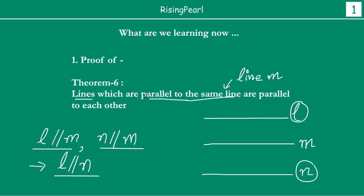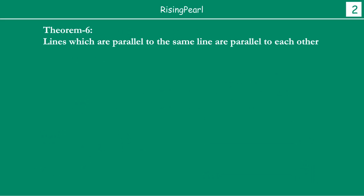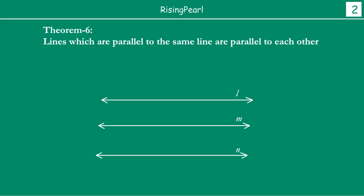So, lines which are parallel to the same line — that is our line M — are parallel to each other. So let's find out how we can prove this. This is our theorem, and if we draw lines L, M and N, then we have to show that L will always be parallel to N.